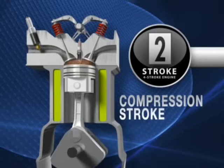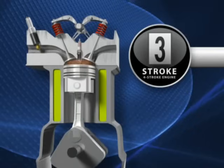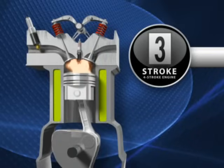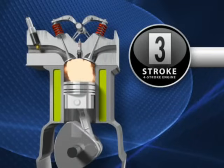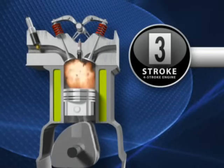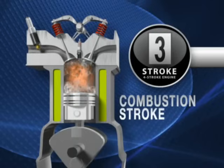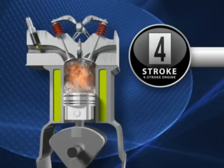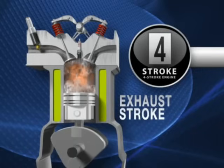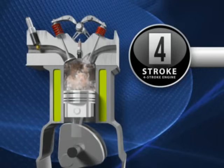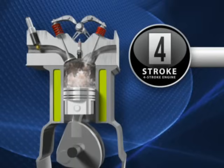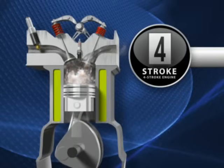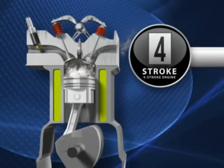At this point, the spark plug fires, sending the piston downward from the expansion of the air and gas mixture. This is the combustion stroke. The fourth stroke is the exhaust stroke. As the piston travels upward, the exhaust valve opens to release the burned air-fuel mixture.